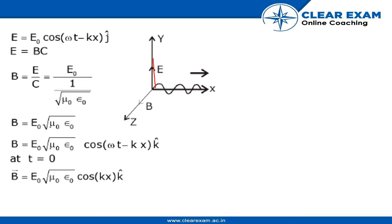E = Bc, which is the relation between electromagnetic and magnetic fields. We substitute the value of B in terms of E and c, where c = 1/√(μ₀ε₀).